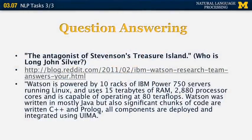In the Jeopardy game, you get questions in the form of answers. So you get something like 'the antagonist of Stevenson's Treasure Island,' and you're supposed to answer, 'Who is Long John Silver?' This is essentially the same as asking who is the antagonist in Stevenson's Treasure Island and then having Long John Silver as the answer. This is one of the examples actually used in the game that IBM's Watson system played on TV.